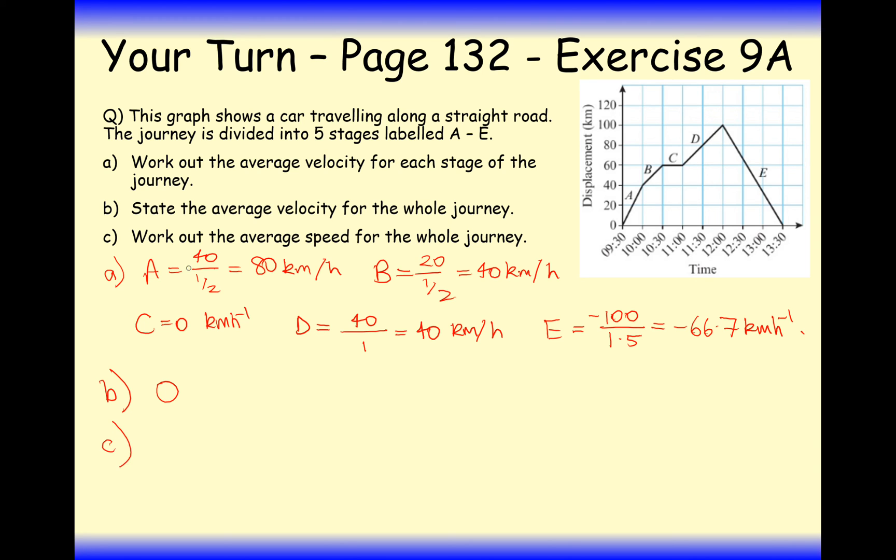Part C is a different question though. Work out the average speed for the whole journey. That's a different kettle of fish. We've traveled 200 kilometers in total for the distance, and we're dividing this by four hours. So in this case it's going to be 50 kilometers per hour, because it's kilometers on the top, hours on the bottom.